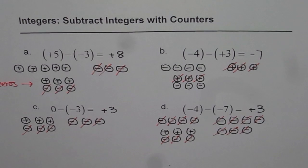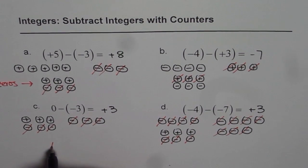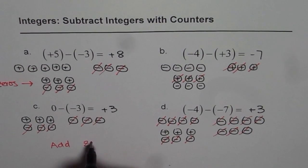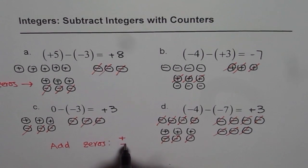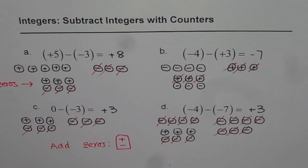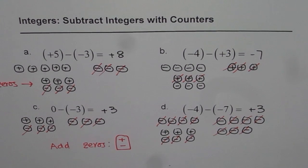I hope you understand these steps — how to subtract integers with counters. The principle involved here is to add zeros. What is a zero? Zero is a combination of plus and minus counters. That is a zero which we can add, and then it helps to take away. So that is the principle behind subtracting integers with counters. I hope the process is clear to you. We'll explore more. Thank you and all the best.